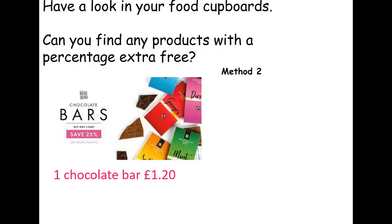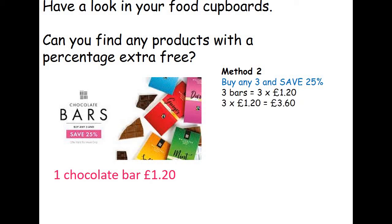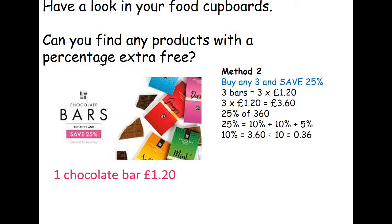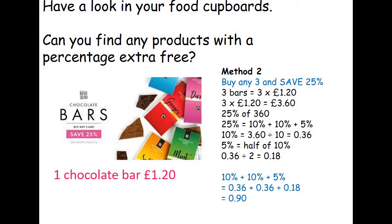Using the second method, we want to find 25% of £3.60. That's 10% + 10% + 5%. 10% of £3.60 is £0.36, and 5% is half of that — £0.18. Adding those up: 0.36 + 0.36 + 0.18 gives us 90 pence. We then remember to take that away from the original £3.60 to work out the new cost, which is £2.70.